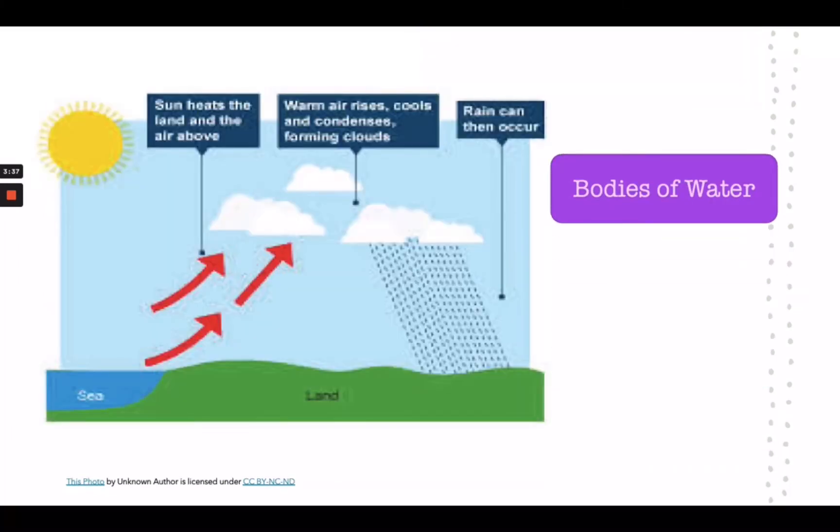Bodies of water: The climate of a place is influenced by the surrounding bodies of water. The slow absorption and release of heat by the body of water greatly affect the climate. Hence, areas that are near oceans have moderate climate as the body of water regulates the temperature. Places that are far from bodies of water have extreme climates as there are no immediate bodies of water to help circulate the movement of cold and warm air.